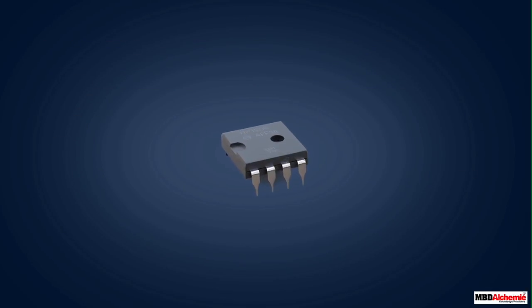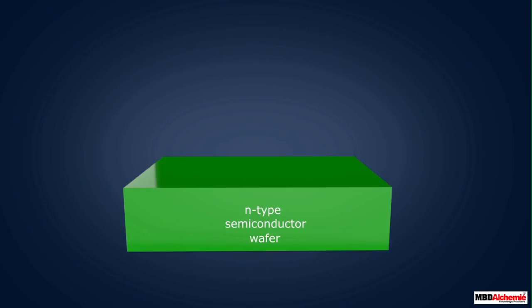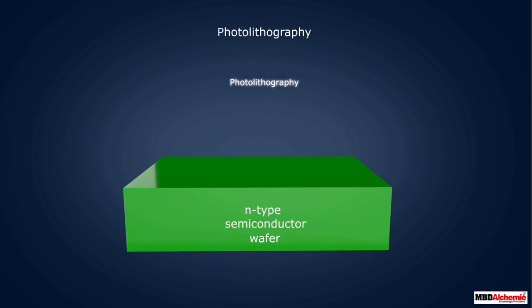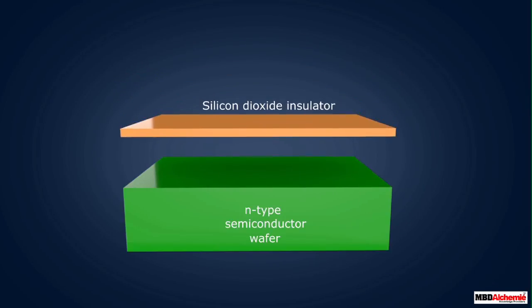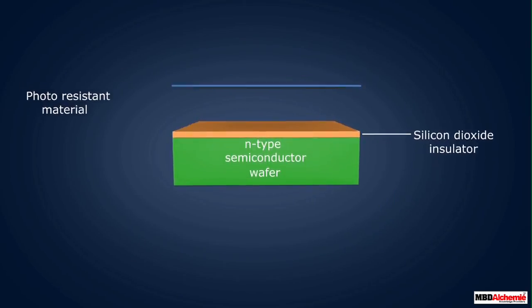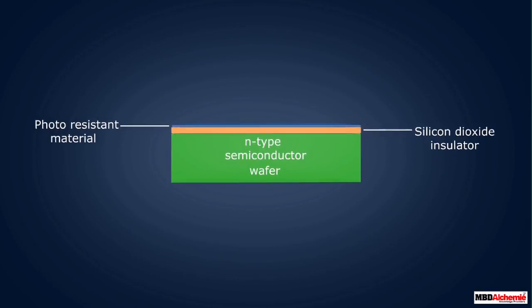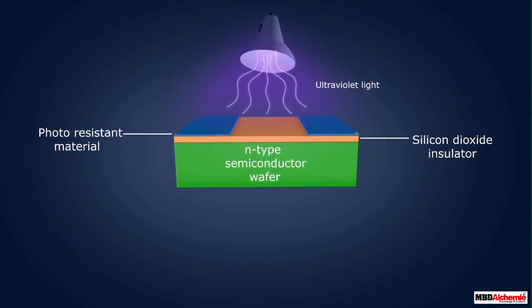Let us now look at the steps followed in the manufacturing of ICs. Firstly, a wafer of n-type semiconductor is taken and the photolithography technique is used. In this technique, firstly a layer of silicon dioxide insulator is coated over it. Then a thin layer of photo-resistant material is placed over the silicon dioxide.